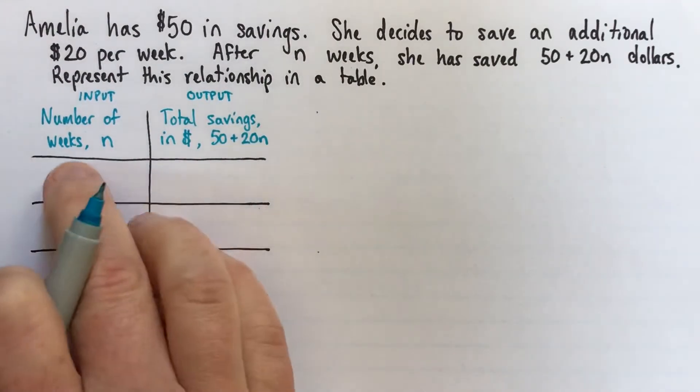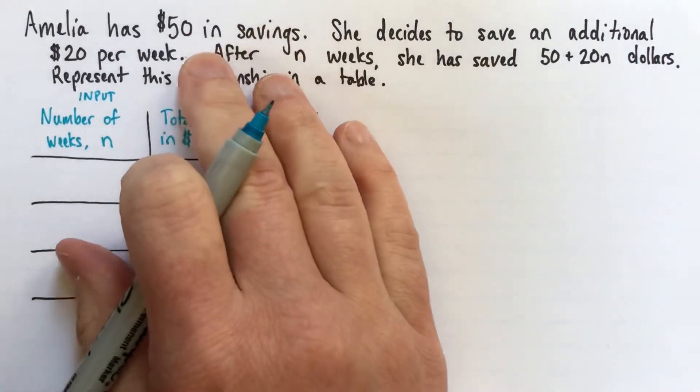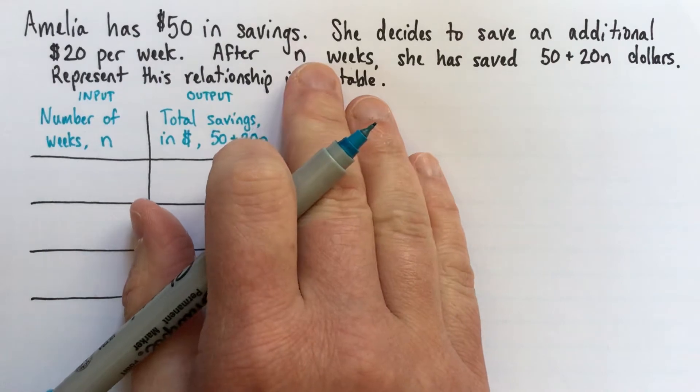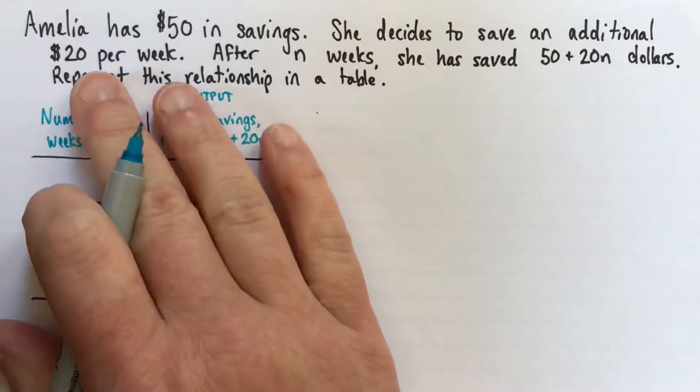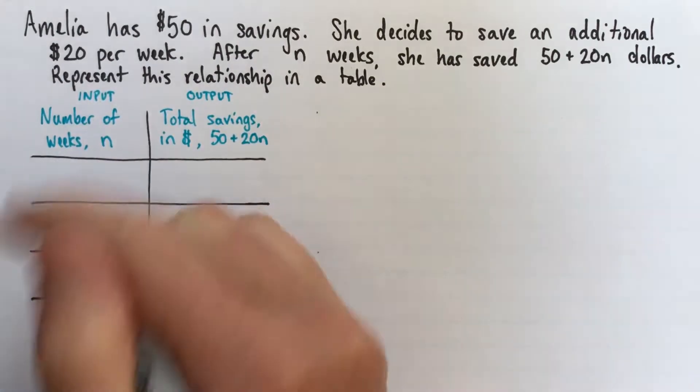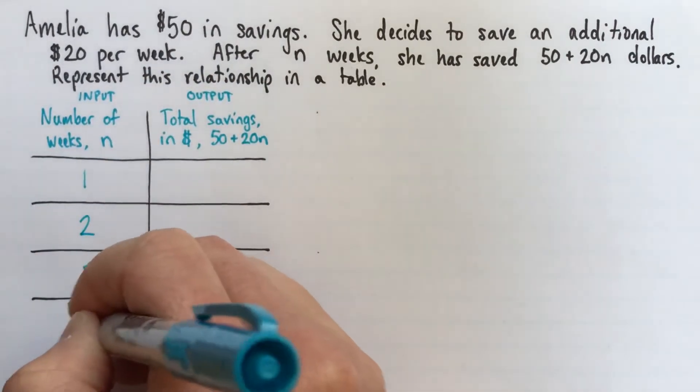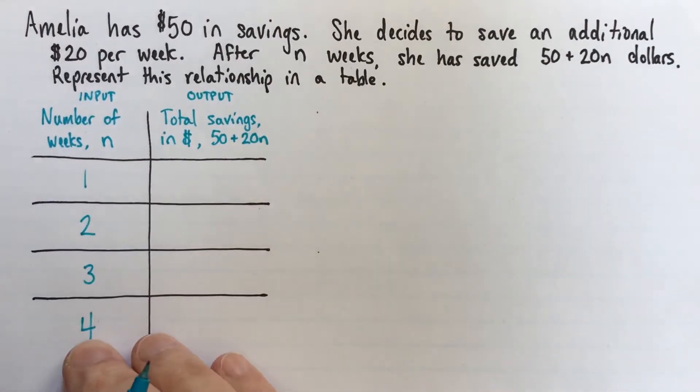So what we're going to do is we'll choose some values for n. And if you knew more about the story, if you knew that you've been doing this for 20 years or something, you would choose different numbers. If you don't really know much, you choose some numbers that are reasonable. So let's just choose one week, two weeks, three weeks. One, two, three, and four. You can choose any numbers you want here.